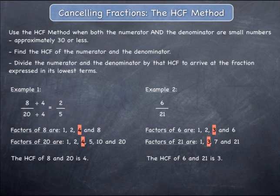Once you have found the highest common factor, divide both the numerator and the denominator by this highest common factor. The result of this division will give you the fraction expressed in its lowest terms. 6 over 21 is 2 over 7 when expressed in its lowest terms.